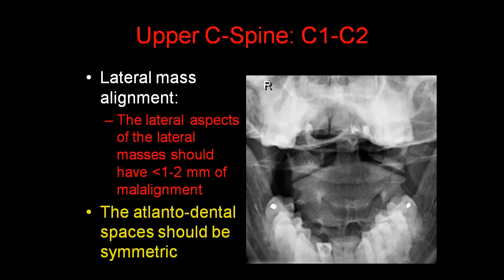On the odontoid view, it's very important to look at the alignment of the lateral masses of C1 and C2. The lateral aspects of the lateral masses should have less than 1-2 mm of malalignment. In addition, the atlantodental spaces should be symmetric.